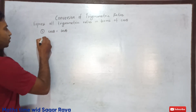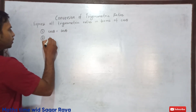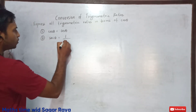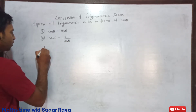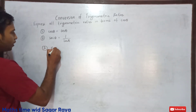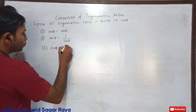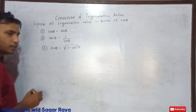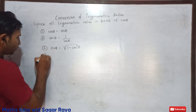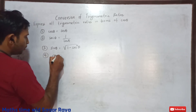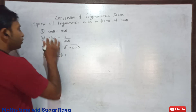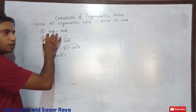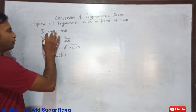So cos theta we can write as it is. Similarly, sec theta we can express as 1 by cos theta. First of all we write cos theta, and the inverse of cos theta is sec theta.